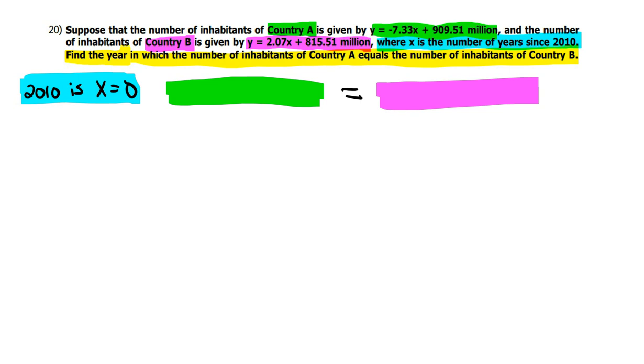And the green equation says Y equals, so just put in that part right here. Don't worry about the word million. It'll work itself out. And then the pink one, which is Country B, that is also given by Y equals. So just put that part right here.